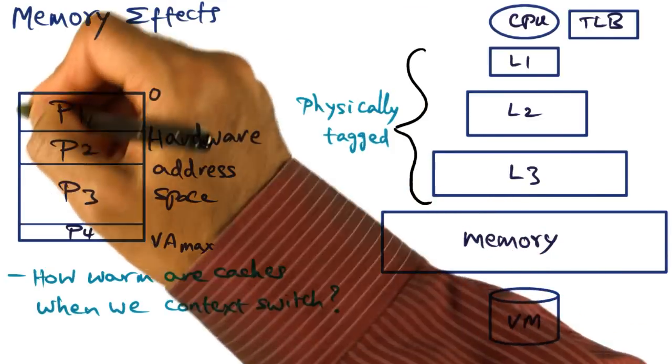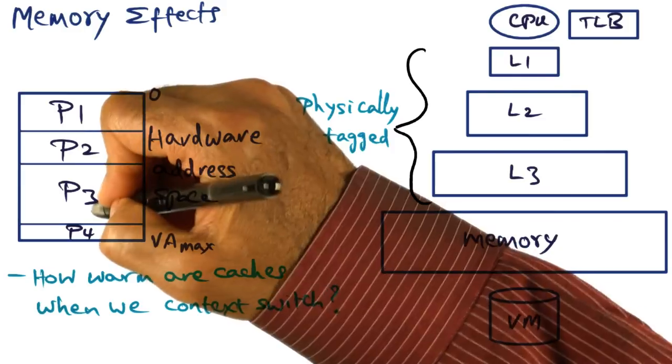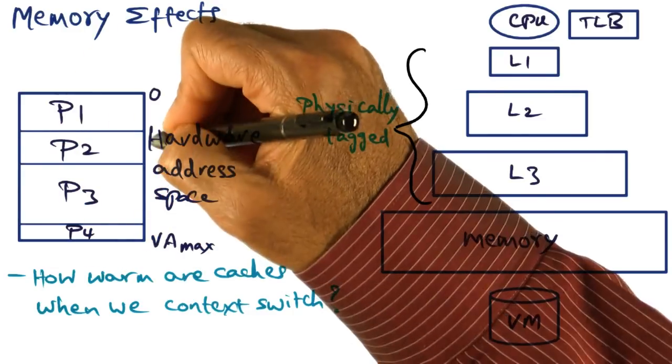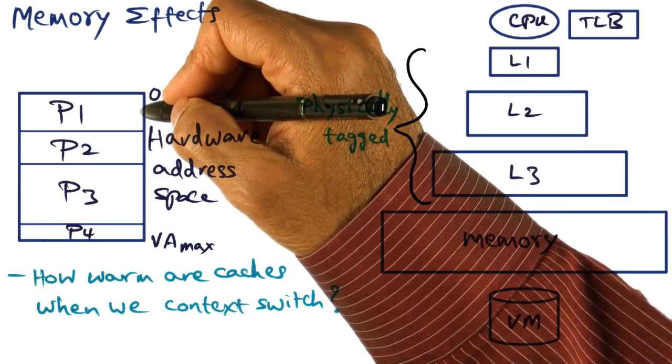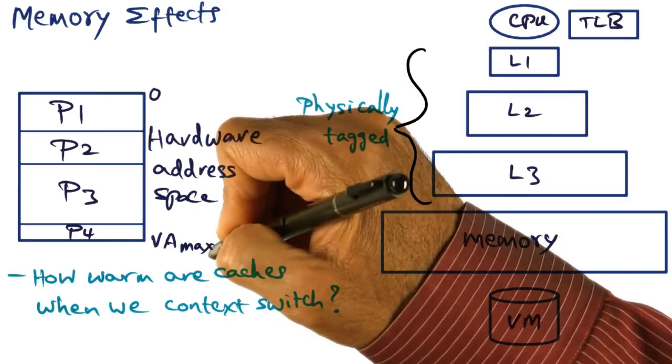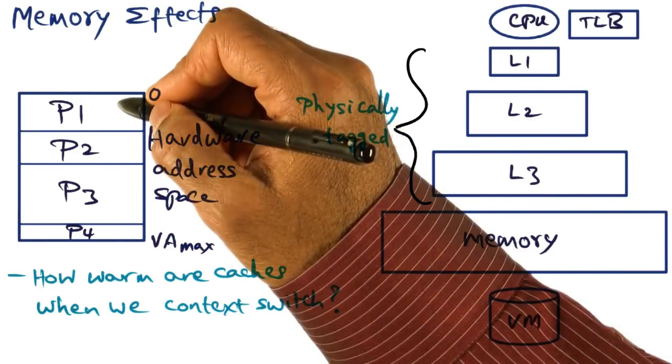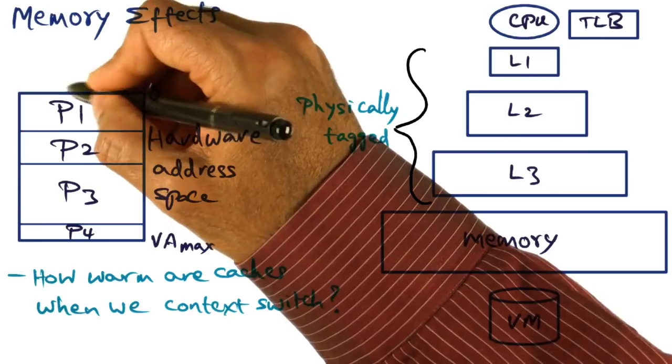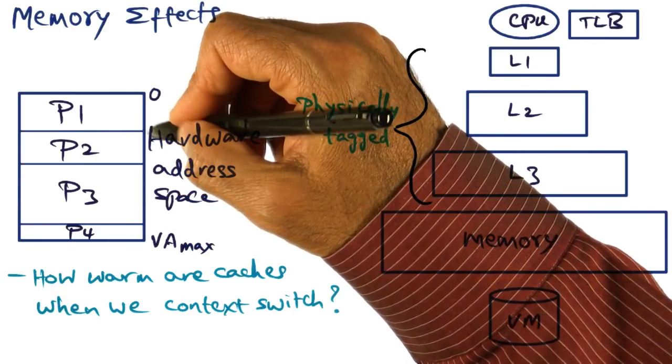Now recall that if we have small protection domains, P1, P2, P3, P4, let's say they're all small protection domains. In that case, Liedtke's suggestion is, don't put each of these in its own hardware address space. Pack them together in the same hardware address space and enforce protection for these processes from one another through segment registers.